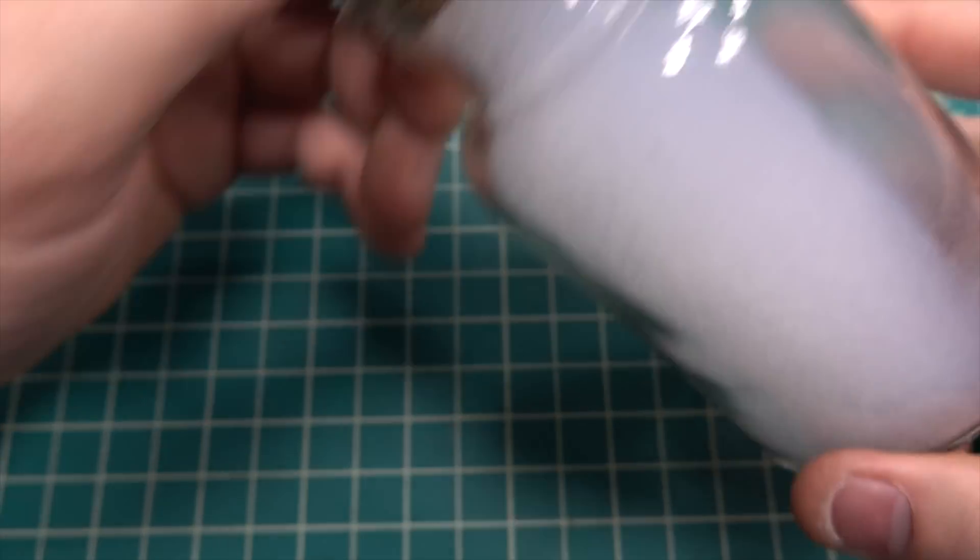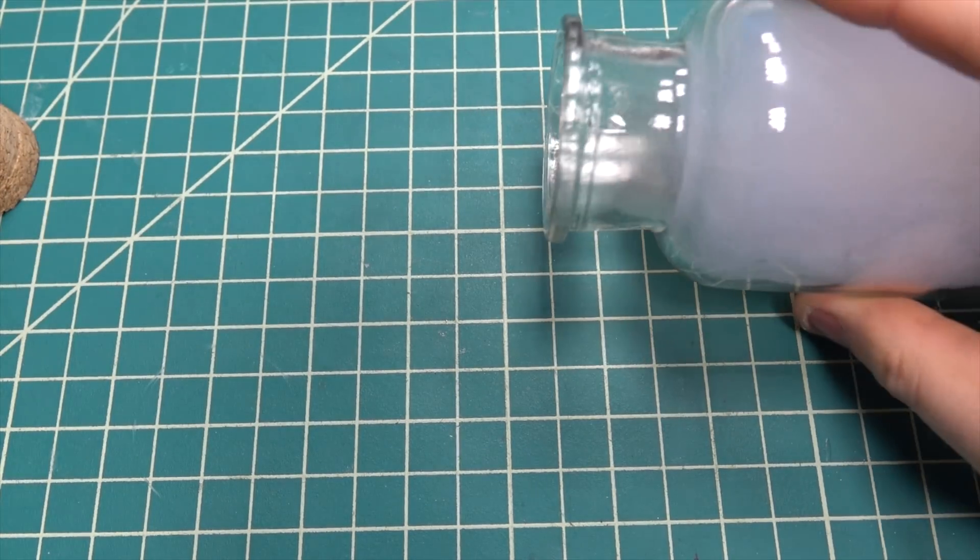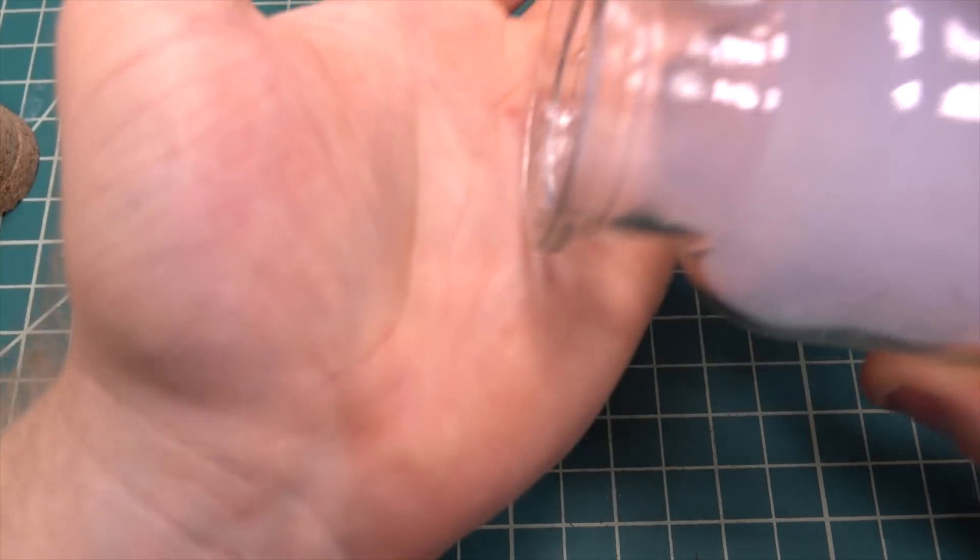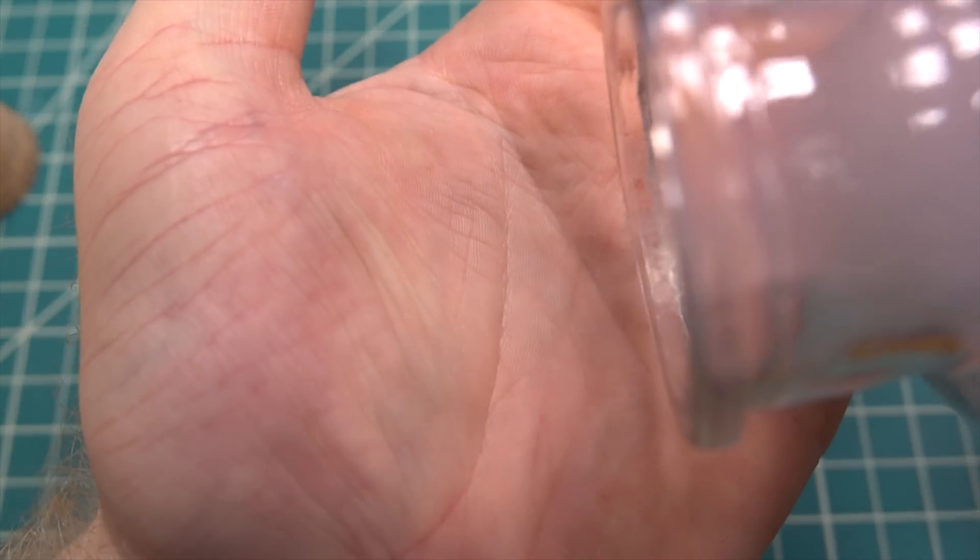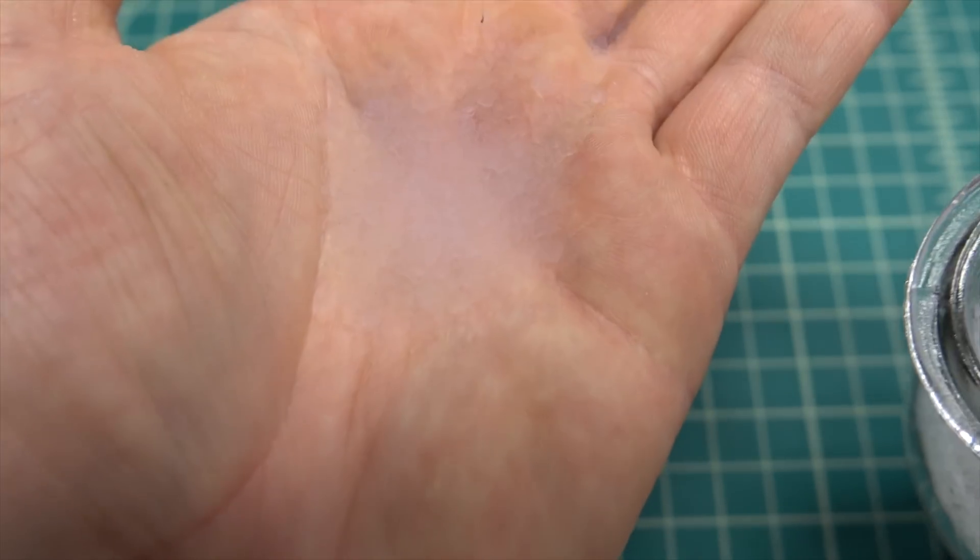If you aren't familiar with silica aerogel, it is a very interesting material. It is the lightest and lowest density solid on the planet. It is made up of tiny particles of silicon dioxide and is more than 95% air by volume. Despite the name aerogel, it is not a gel at all.